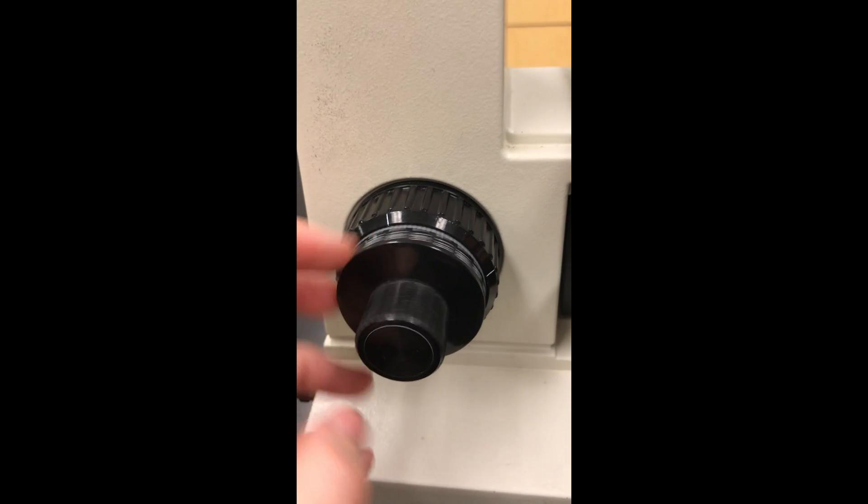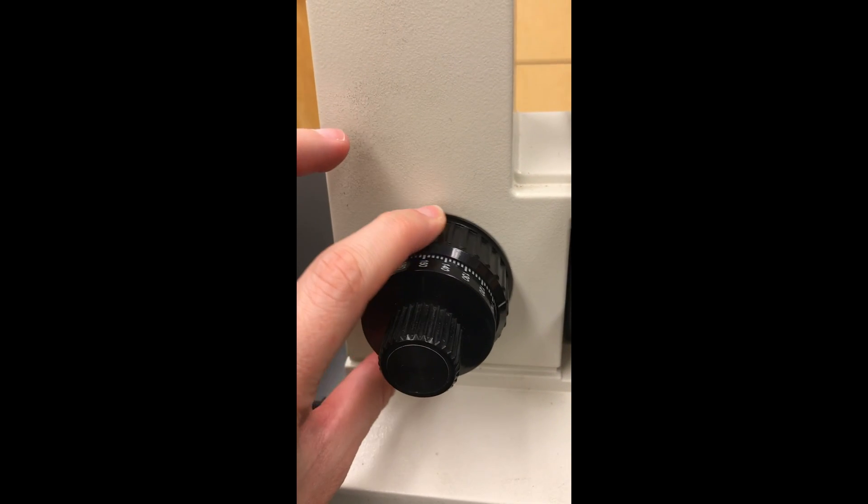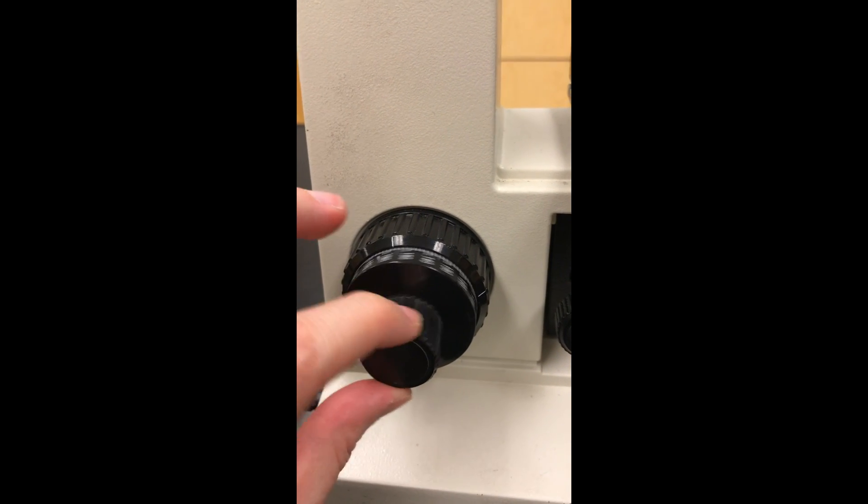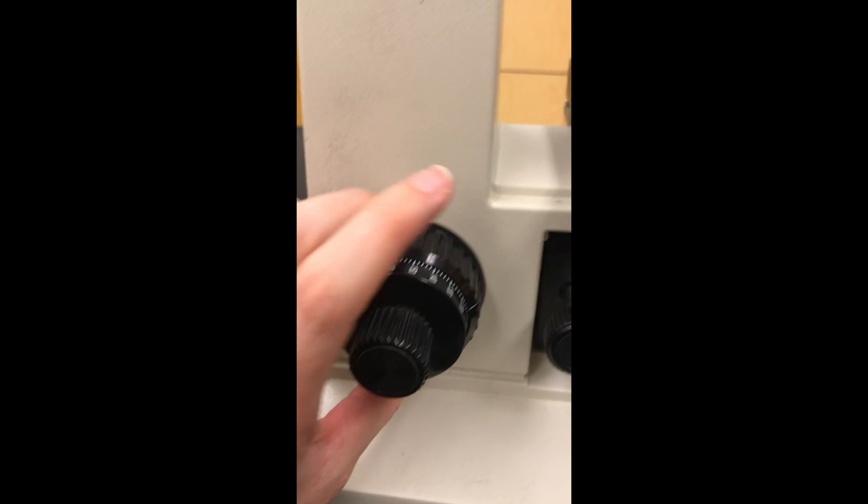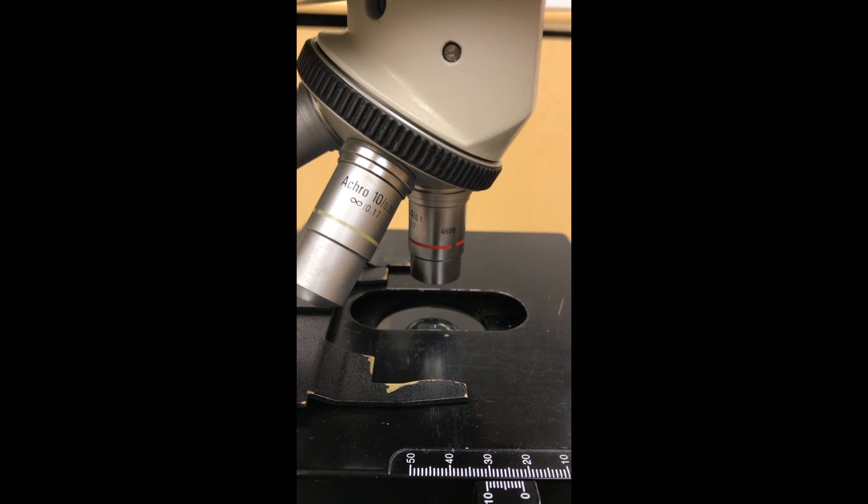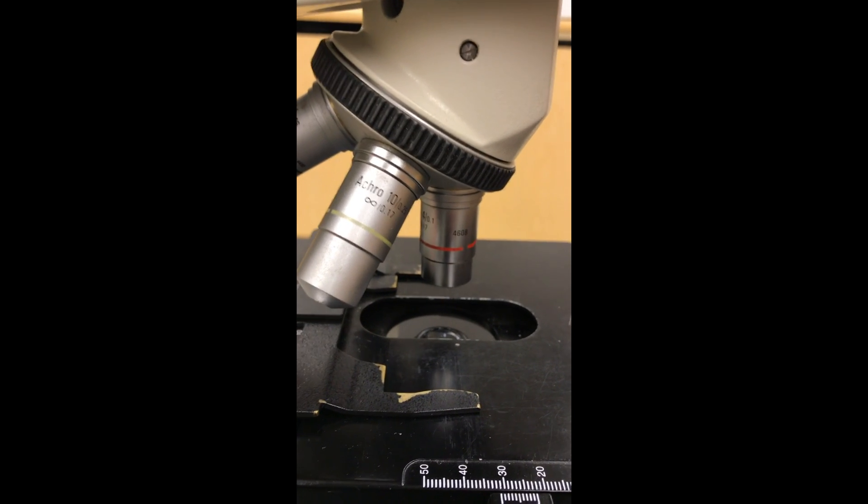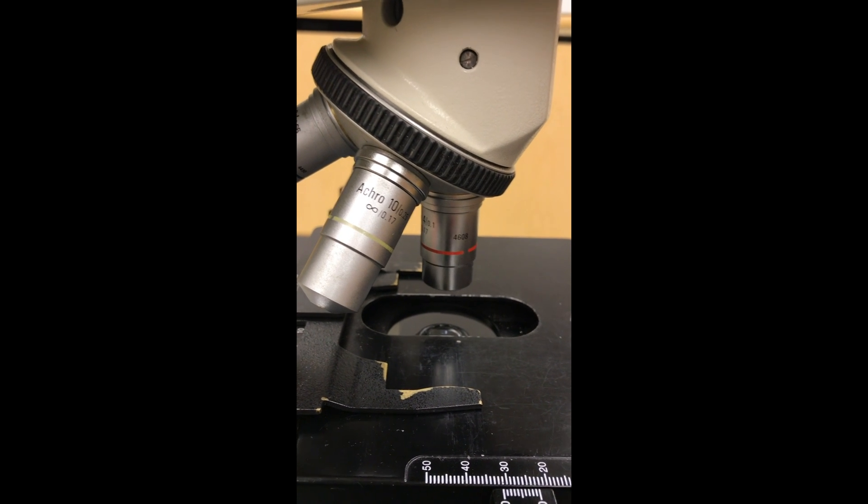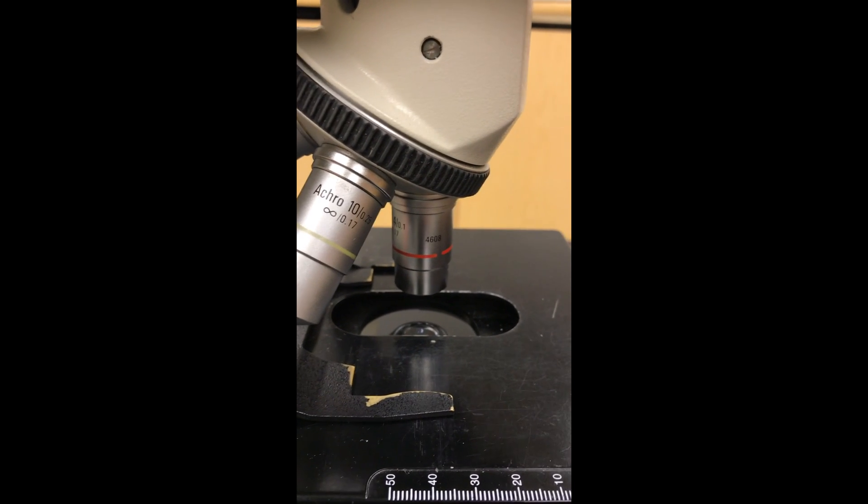You're then going to come over here and you'll see two knobs. The big one is coarse focus. The little one is fine focus. This is what we use in the beginning. So we'll pretend I have a slide in here and I look through my objective. I'm going to use coarse focus. And do you see how much it moves the objectives? It moves them very quickly. So we're going to be able to focus rather quickly.